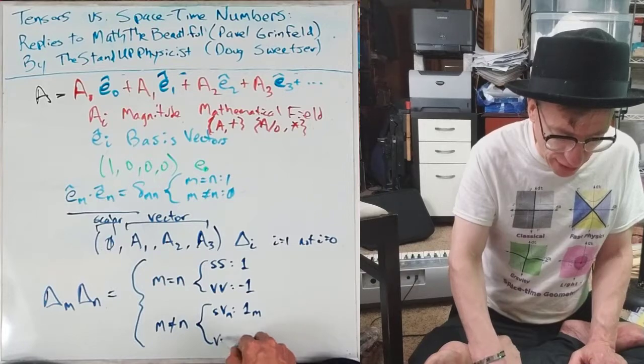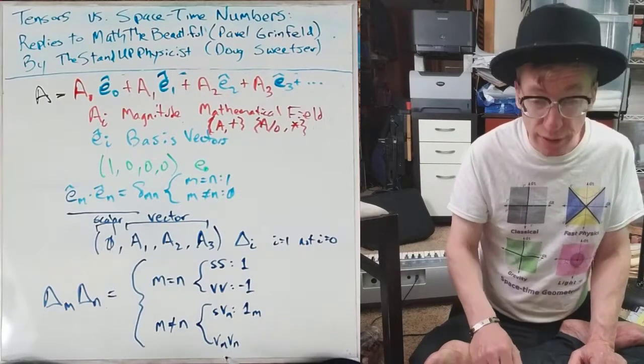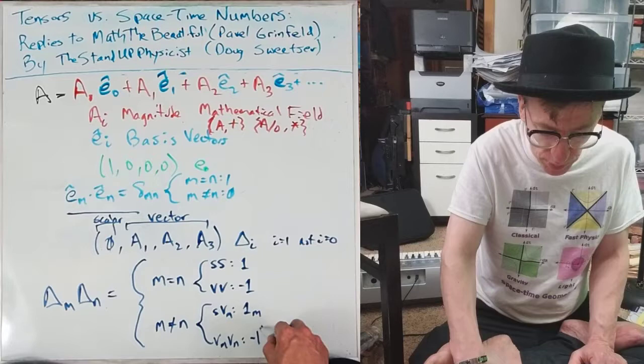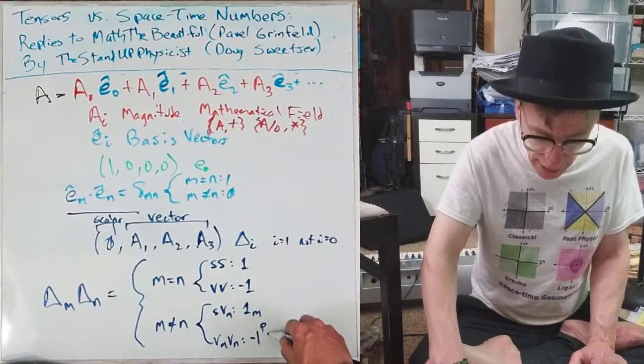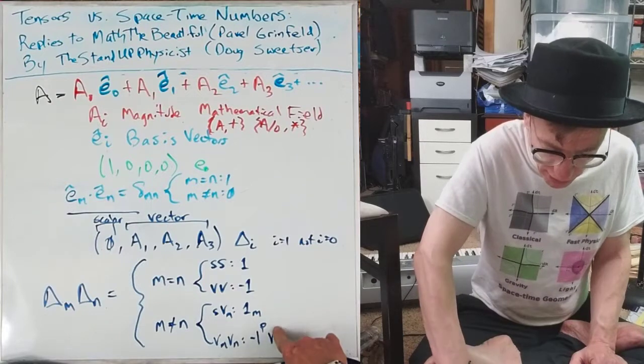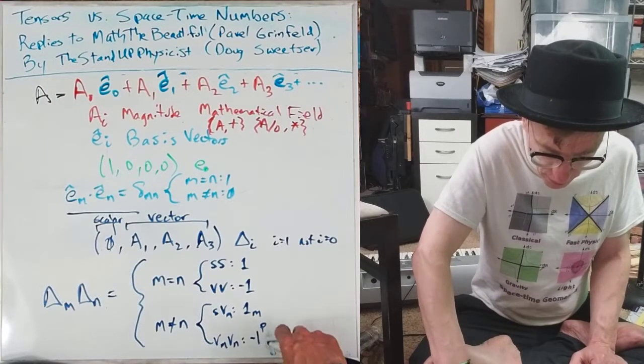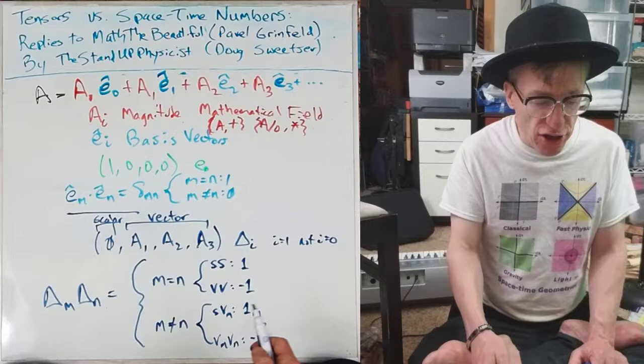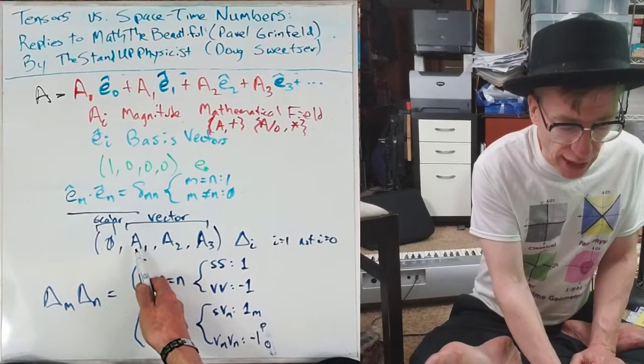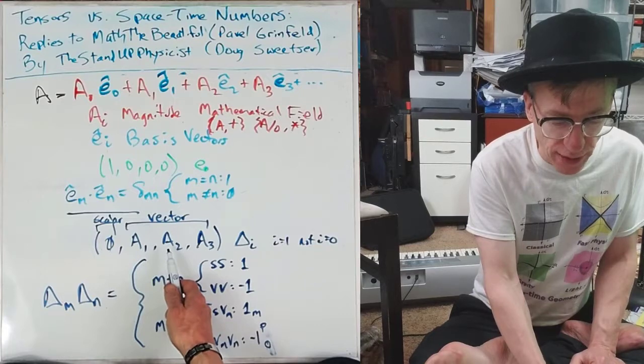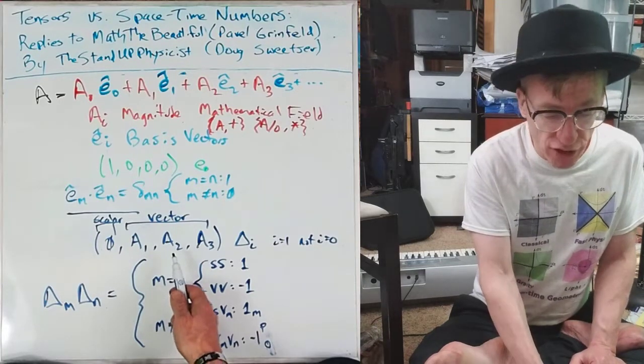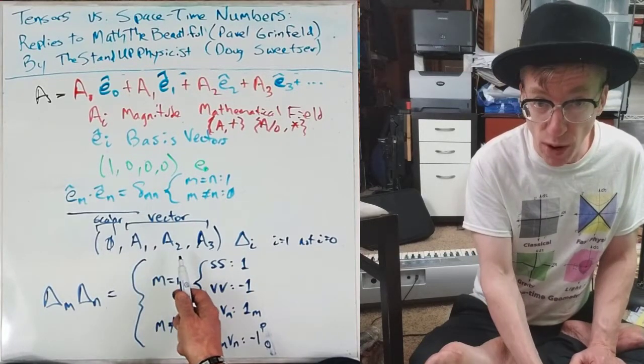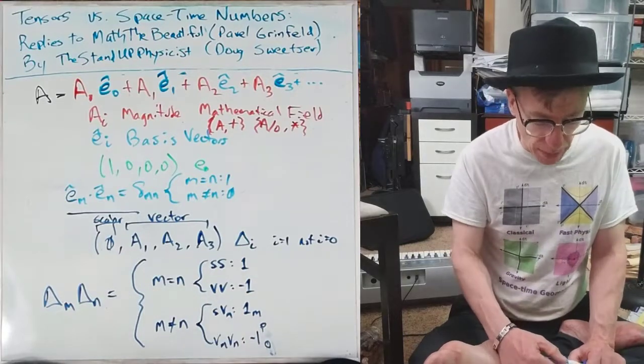But what happens if you take a vector M and a vector N? And these guys are not the same. Well, what you end up with is minus 1 to the permutation of that to the vector, oh, I should say, maybe, O. So not M, not N, the third guy. So if I had, like, 1 in the A_1 spot, and 1 times A_2, well, there's no permutation going on there. So you just get A_3. Whereas, if it was A_2, A_1, that's one permutation, so you get the minus 1. Now, that's huge.